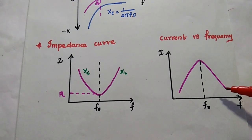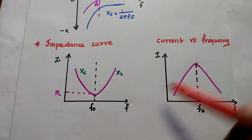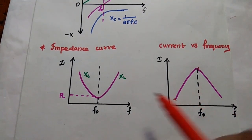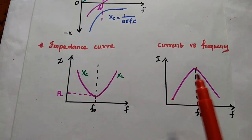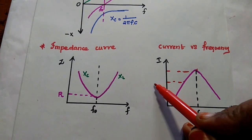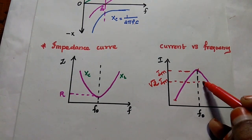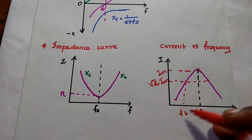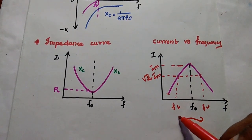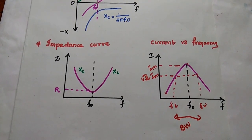For the current versus frequency curve: whenever impedance is minimum, the maximum amount of current flows through the circuit. Impedance and current are inversely proportional. Taking the half-power current value — the half power value is Im divided by √2 — this peak occurs at the resonant frequency. The lower cutoff frequency is F1 and the upper cutoff frequency is F2. The bandwidth is the difference between the upper and lower cutoff frequencies. That is the bandwidth of this resonant circuit.